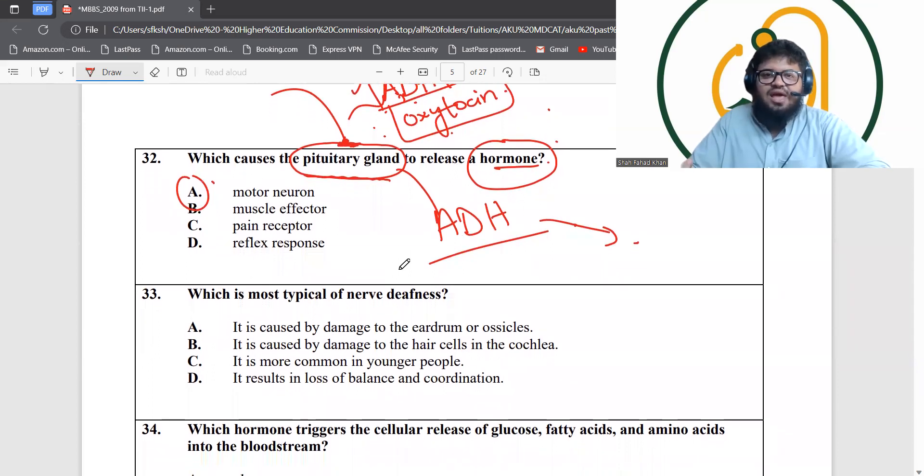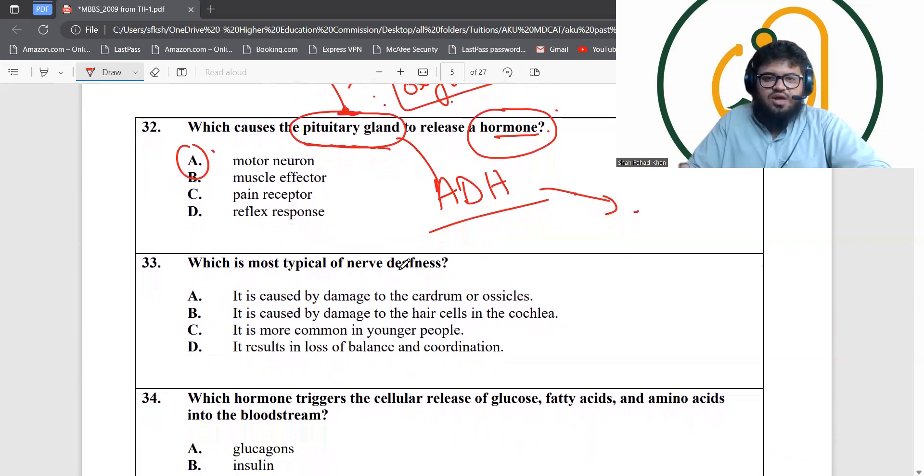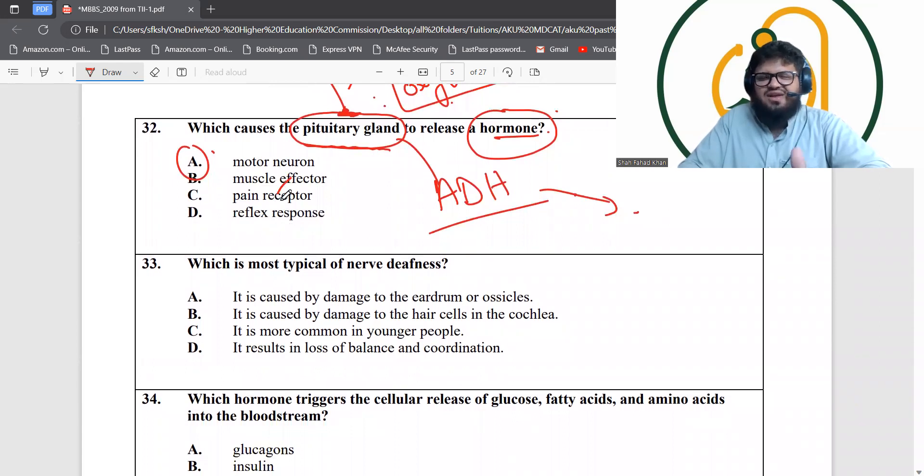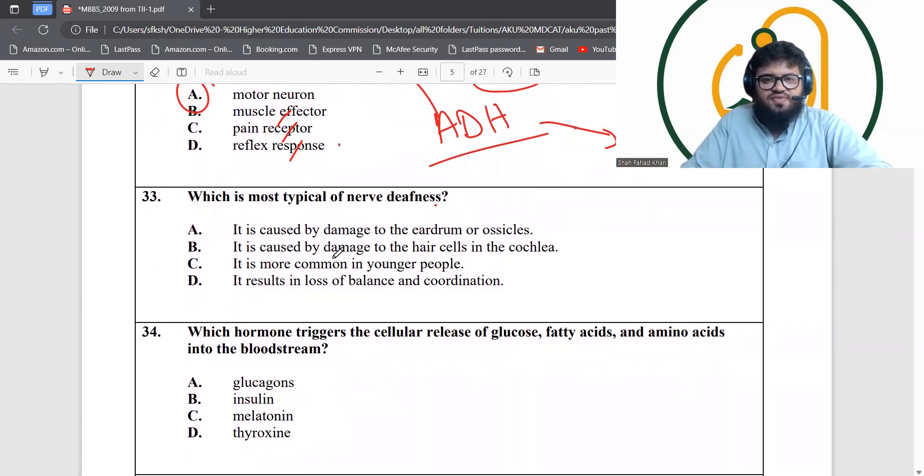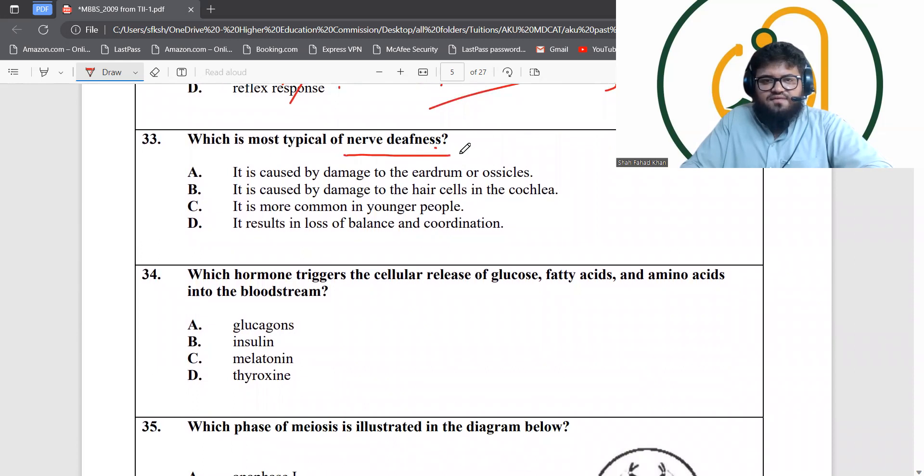ADH is going to go in and act on the kidney. Pituitary gland is acting as an effector in this case and motor neuron is stimulating it. None of the other options make sense. Muscle effector has nothing to do with pituitary, pain receptor doesn't have anything to do here because it's in the skin. Motor neuron is the better answer.